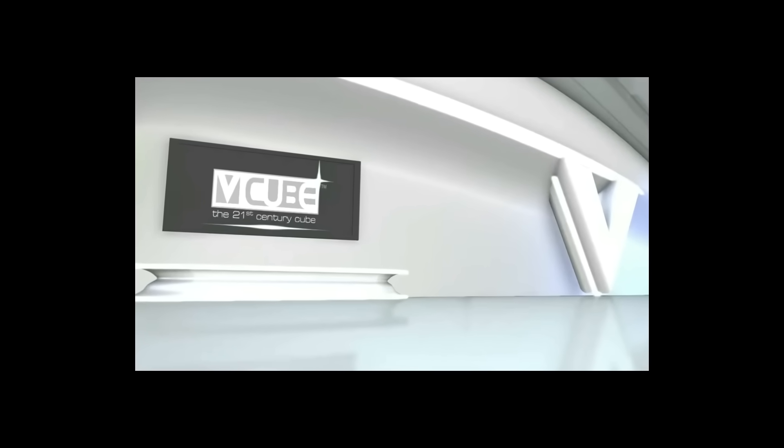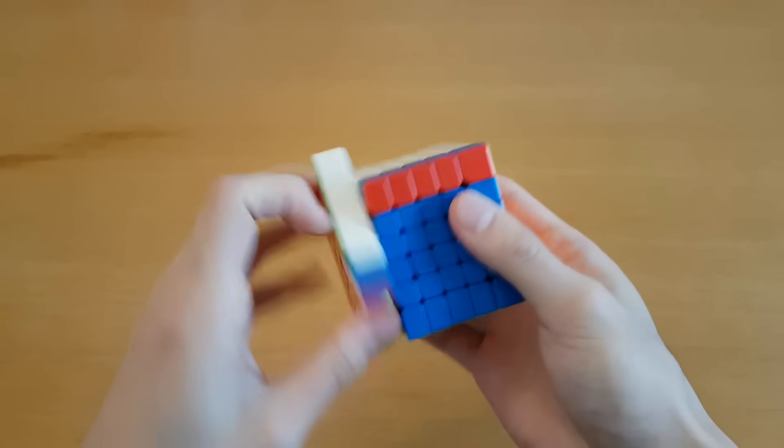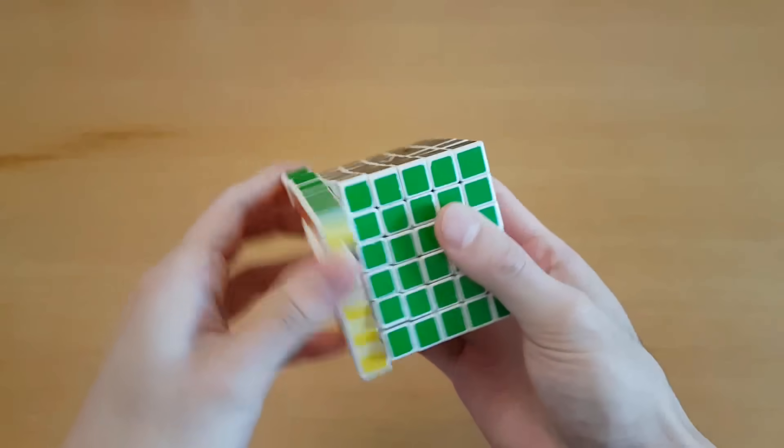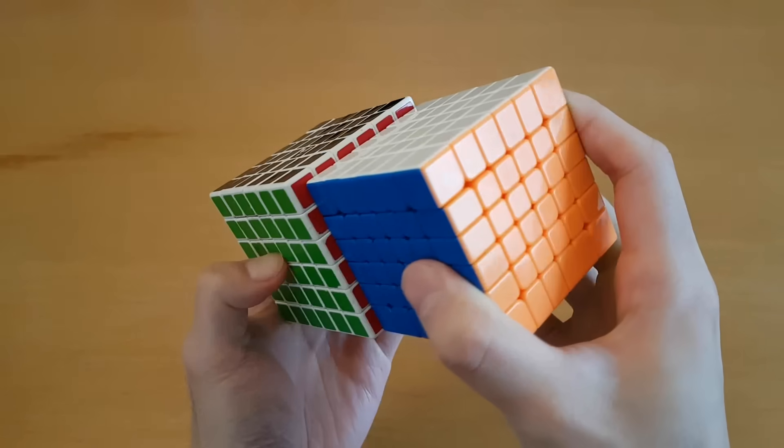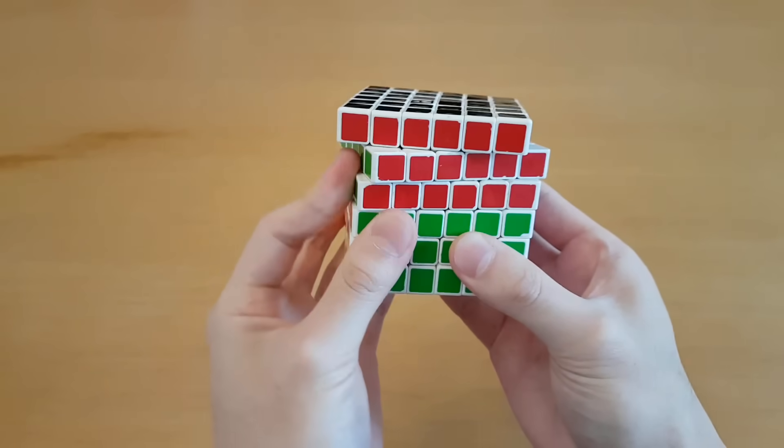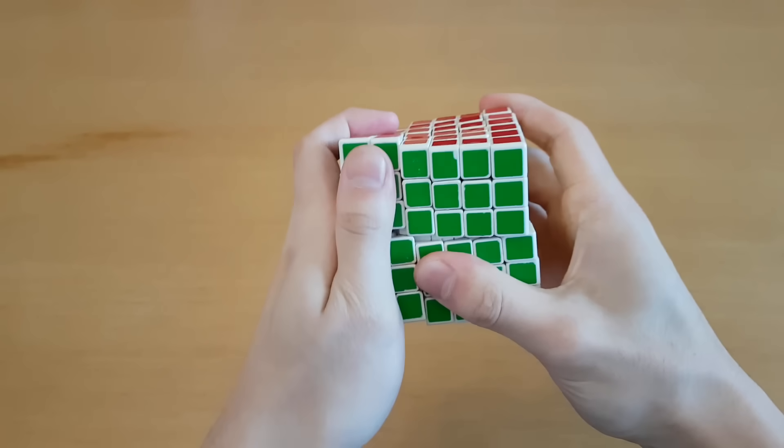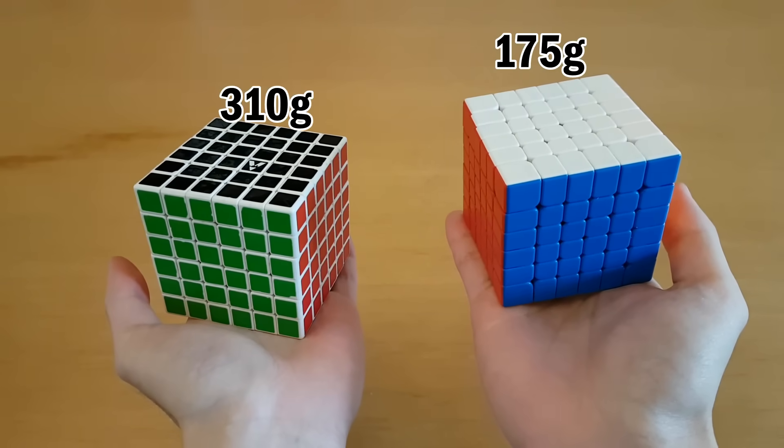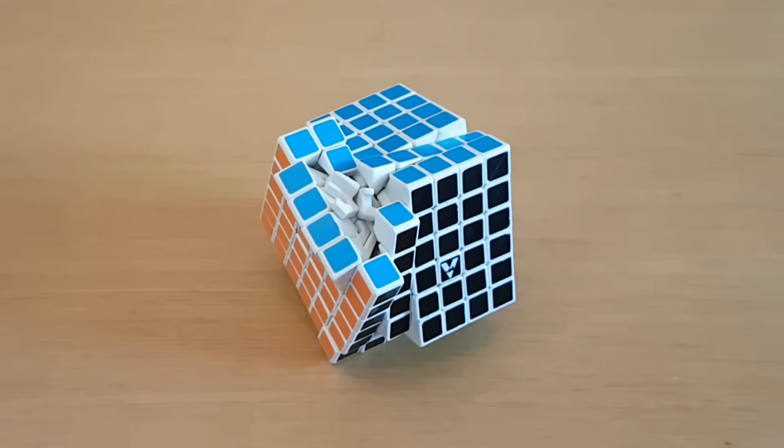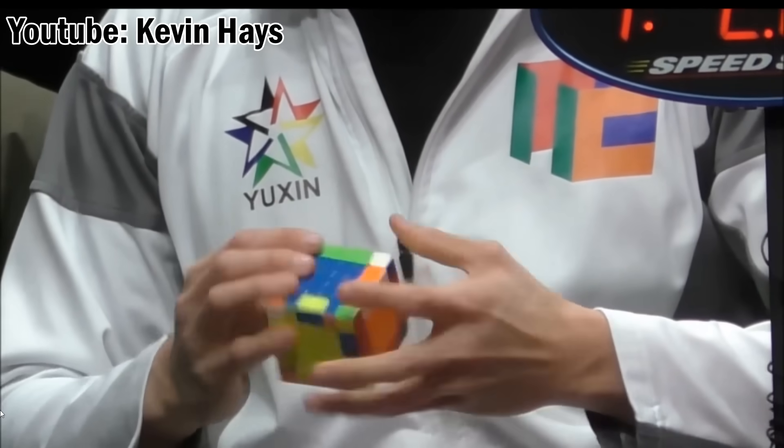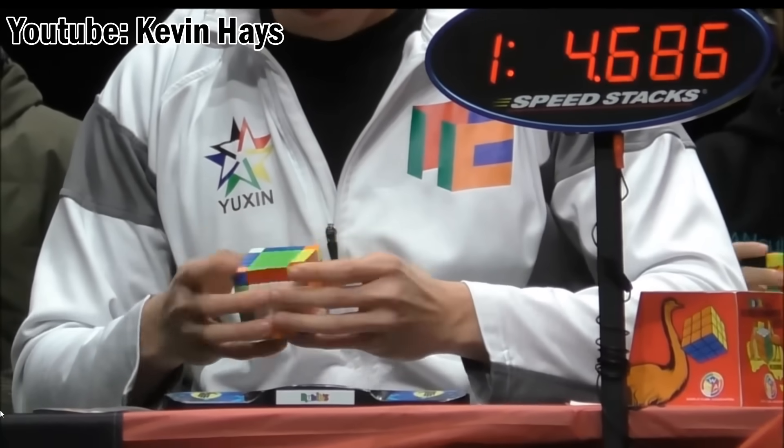Despite all these challenges that needed to be overcome in order to create the first 6x6, V-Cube came through. Although compared to the best 6x6s from today, you would say that it's too loud, it's a bit too big, it's hard to turn, it can lock up, it's too heavy, and it has a high risk of pops. That's just a testament to how far Cube hardware has come along since then.